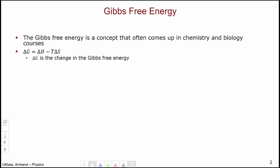Let's deconstruct this equation. Delta G is the change in the Gibbs free energy, this new quantity that we're introducing. Delta H is the change in enthalpy, not the change in energy, the change in enthalpy that we discussed back in unit four.